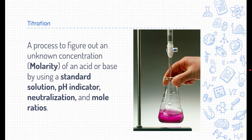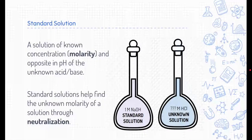A titration is a process to figure out an unknown concentration, also known as molarity. Those two words are interchangeable. If we're trying to find the concentration of an unknown acid or base, we need to know a few things: what a standard solution is, we need a pH indicator, we need to know how neutralization works, and we need to know about mole ratio.